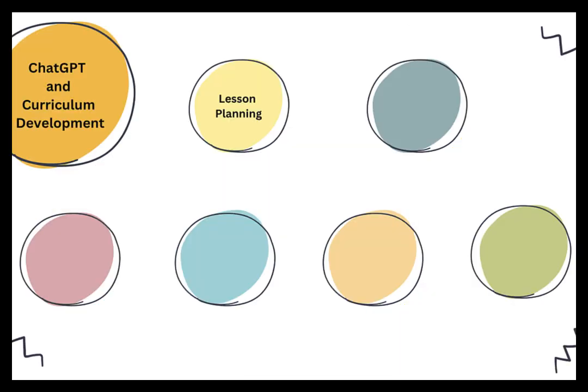Now let's look at how ChatGPT can be used in curriculum development, including lesson planning. Similar to brainstorming, it can generate relevant topics, propose potential subtopics, and prompt discussion and collaboration. ChatGPT can also review faculty course materials such as syllabi, assignments, and readings, and provide suggestions based on relevance, complexity, and alignment with learning outcomes.